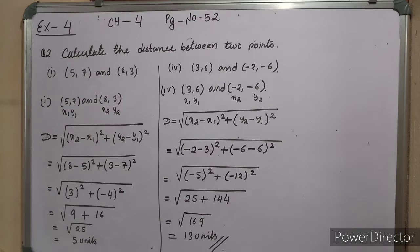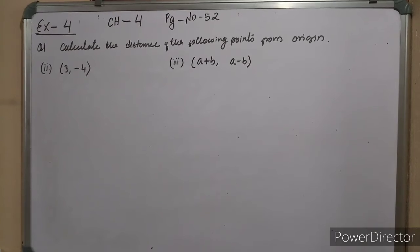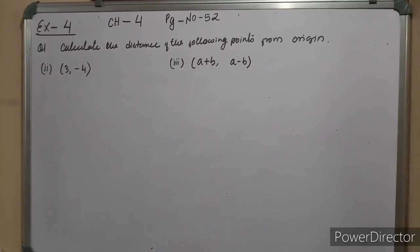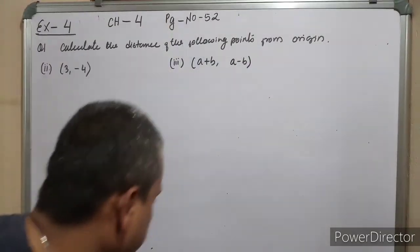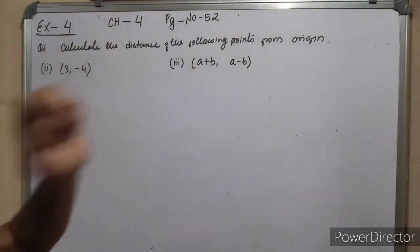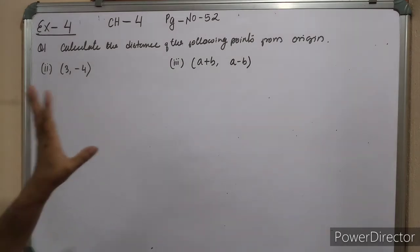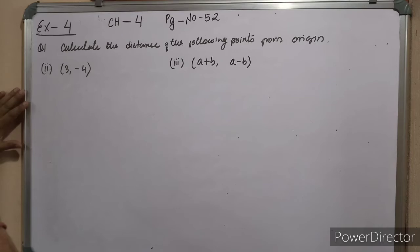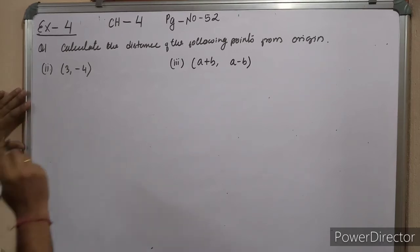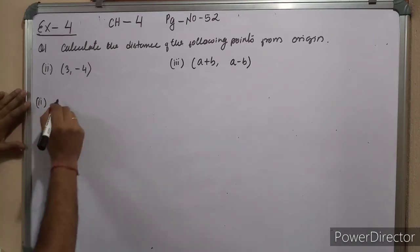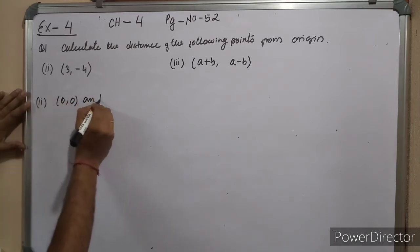That's how you use the distance formula. Now calculate the distance of the following points from the origin. From the origin means the origin is at (0, 0).